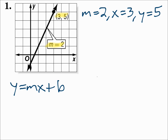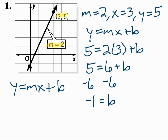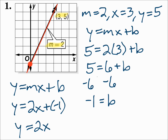So in y equals mx plus b: y is going to be 5 from the point, m is 2, x is 3 from the point, plus b. Solve for b. 2 times 3 is 6. Subtract 6 from each side and b is negative 1. So the y-intercept is negative 1 — that line crosses the y-axis at negative 1. Now finish the question: put 2 for m and negative 1 for b into the formula and simplify. y equals 2x minus 1.